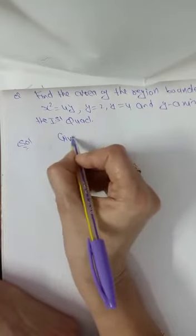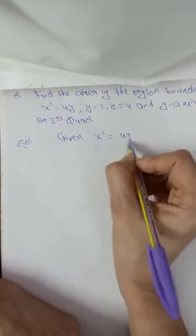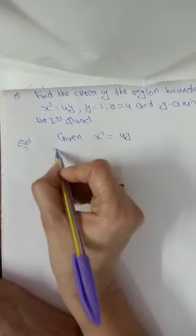Right, again first of all we define the curve. So given x square equals to 4y, it is an upward parabola, and y equals to 2 and y equals to 4 are lines parallel to x-axis.